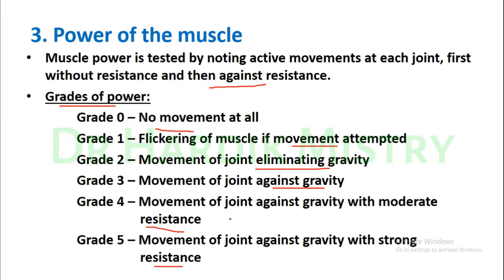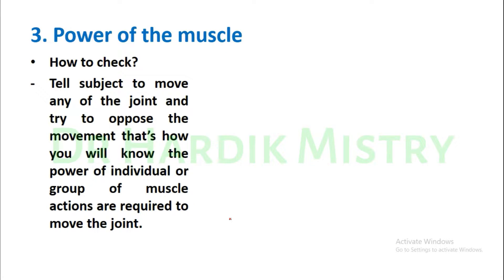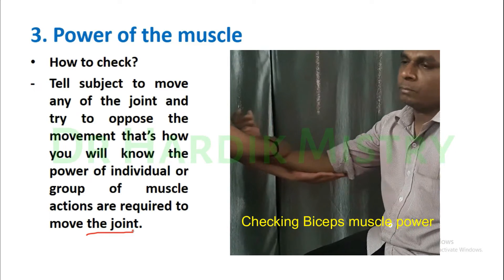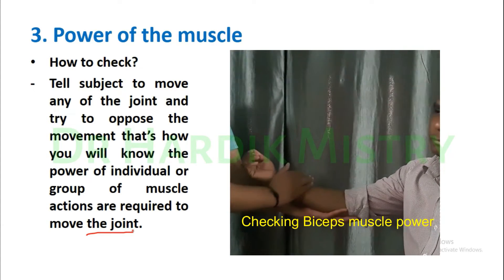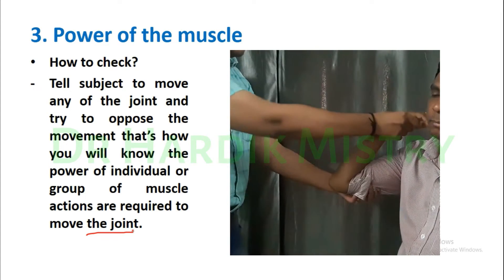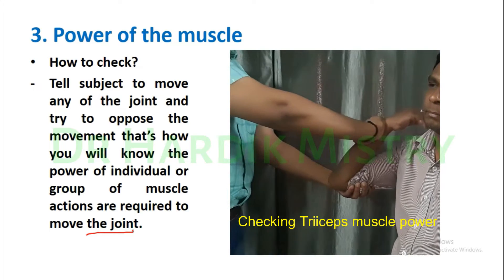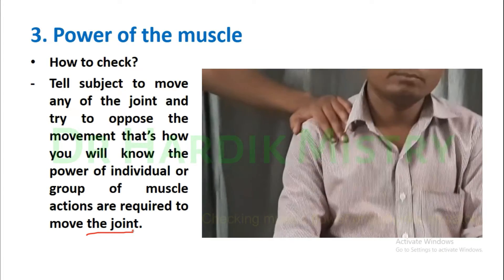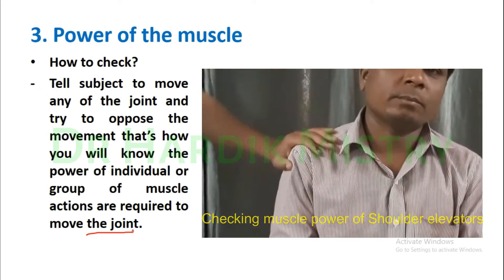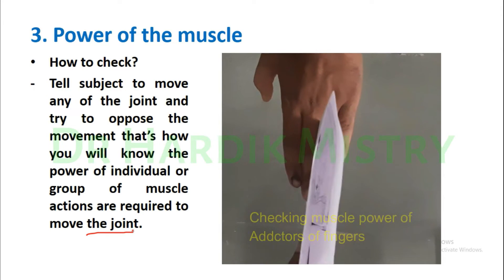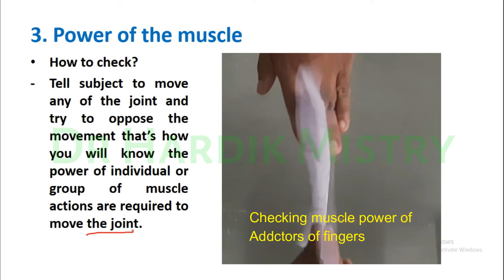To check the power of a muscle, tell the subject to move any joint and try to oppose the movement. That is how you will know the power of individual or group of muscles. Actions are required to move the joint. You simply oppose the movement of whatever muscle you are checking.